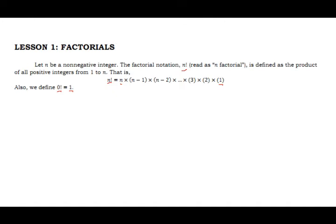Let's have some examples about factorial notation. For 3 factorial, we said that n! equals n times (n-1) times (n-2) down to 1. So 3 factorial is 3 times 2 times 1. The numbers decrease by 1 until we reach the lowest number which is 1. So 3 times 2 is 6, times 1 is still 6. Therefore, 3 factorial equals 6.